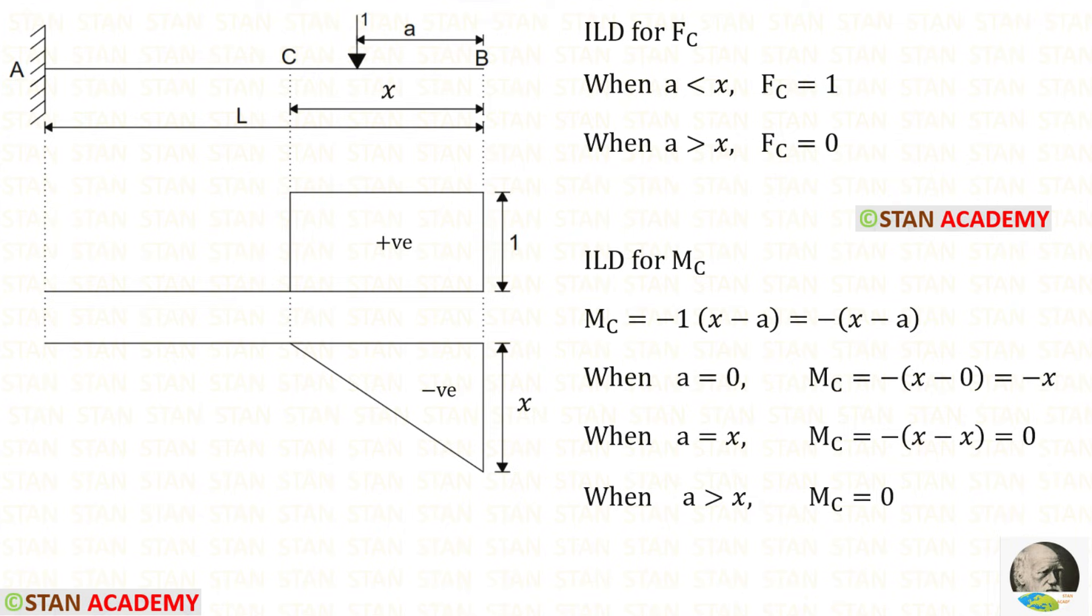Now let us draw the ILD for MC. To find the moment at C, we can use left hand side rule. Clockwise will be positive and anti-clockwise will be negative. The unit load is acting in the clockwise direction, so it will be negative.